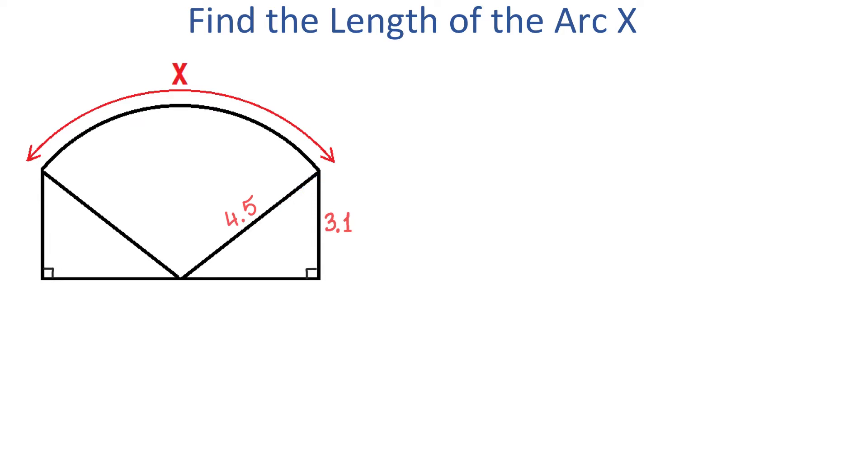We need to find the length of the arc X. To find the length of this arc, first we need to find this central angle that intercepts this arc. Let's call this angle theta. Now, before we find this angle, in this right triangle, we will find this acute angle, and let's call it angle alpha.